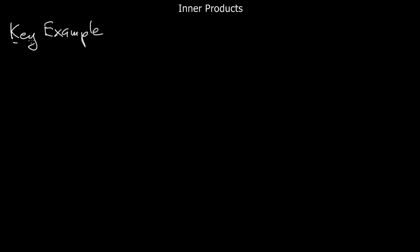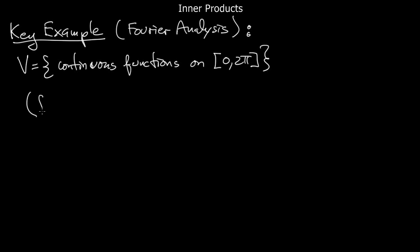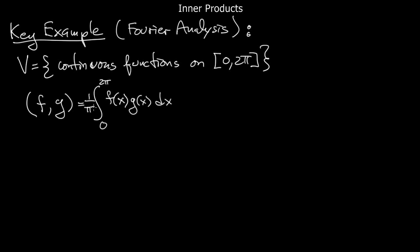Let me illustrate all of this with a key example — really a motivating example for this abstract definition, and it's intimately tied up with Fourier analysis. This is where you have an infinite dimensional vector space. Take V to be the continuous functions on the interval from 0 to 2π.